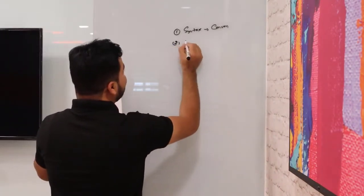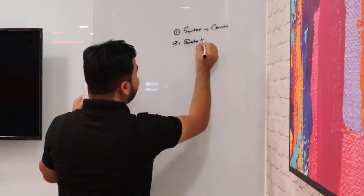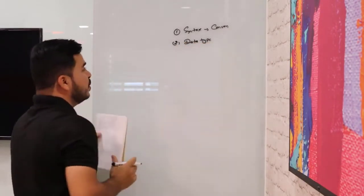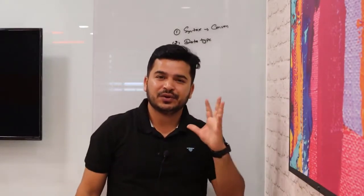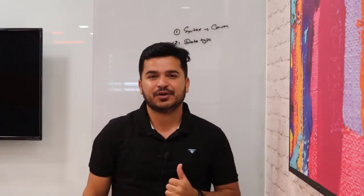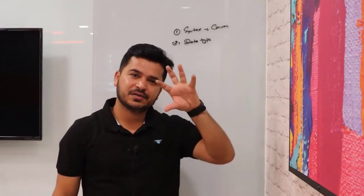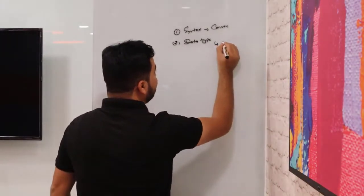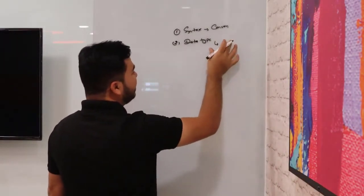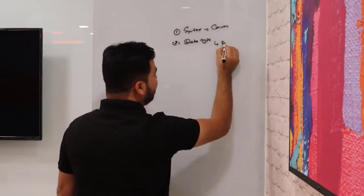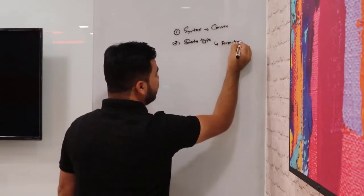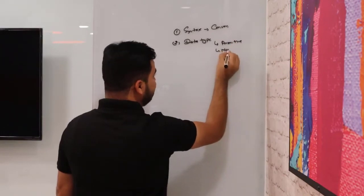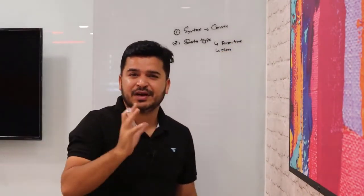Next, you need to understand data types — the different kinds of data types we have in Java. When you talk about any programming language, not only Java, data type is the most important part. First, what data you have; second, how you manage this data. Once you understand data types, you can manage data easily. You will be covering two sections: primitive data types and non-primitive data types.